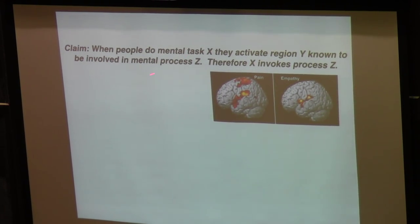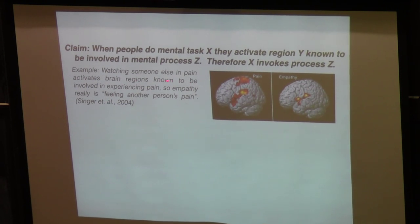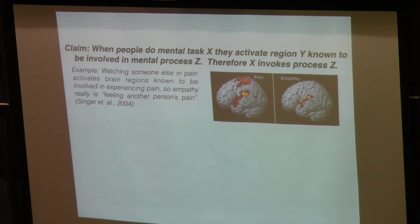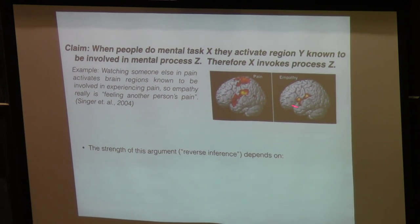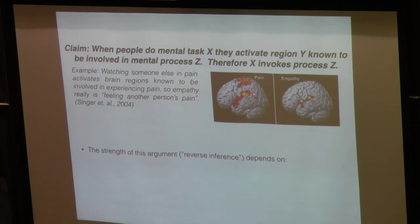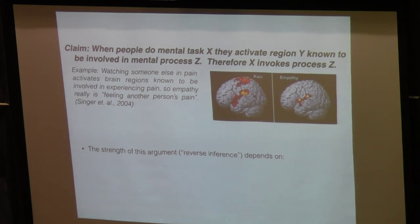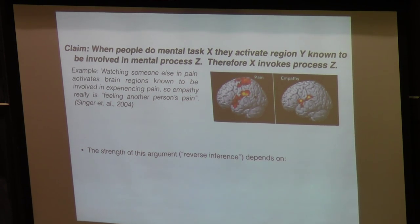Another mistake people make is claiming: when you do some mental task X, you activate region Y, which is known to be involved in some mental process Z, therefore X invokes process Z. A really famous example is: watching someone else in pain activates brain regions known to be involved in experiencing pain — so empathy really is feeling another person's pain. This is called reverse inference. Just because an area activates in both conditions — both seeing somebody in pain and you being in pain — doesn't mean it encodes pain; it could encode many other different things. You need to do proper control conditions to check that it really is specific to encoding pain.